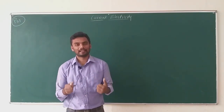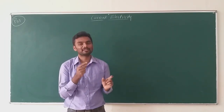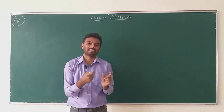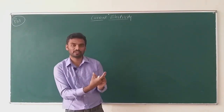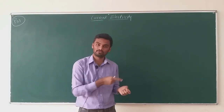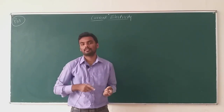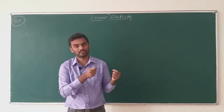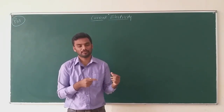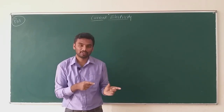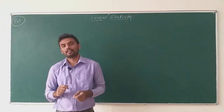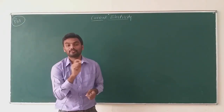We got clarity about the difference between EMF and terminal potential difference. When the circuit is open, the potential difference is called EMF. When the circuit is closed — which means when current is flowing — we call the potential difference across the terminals of the battery as terminal potential difference. When the circuit is closed it is TPD; when the circuit is open, it is EMF.